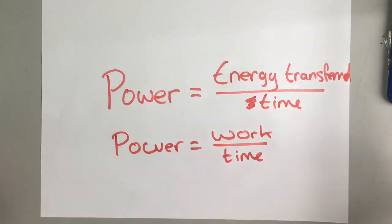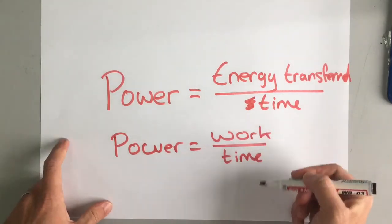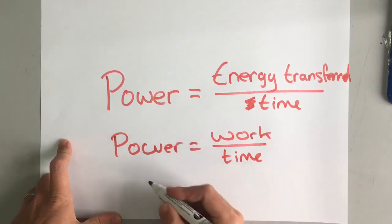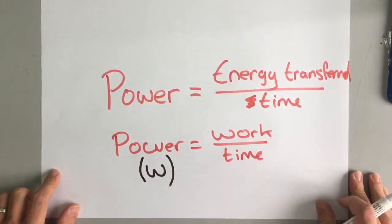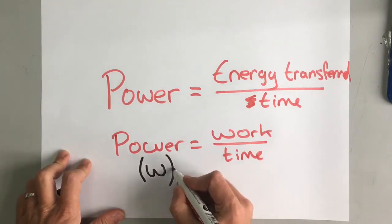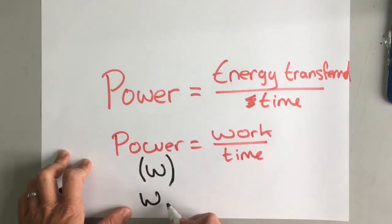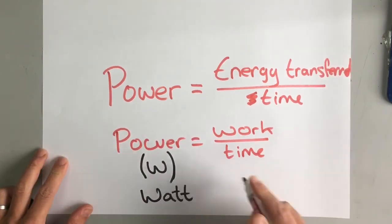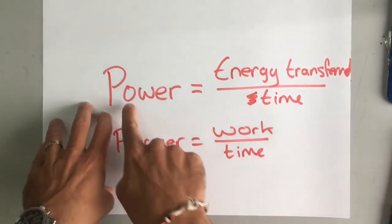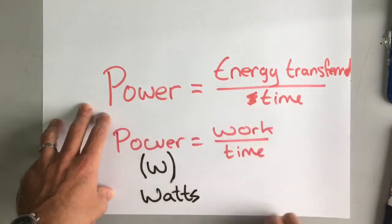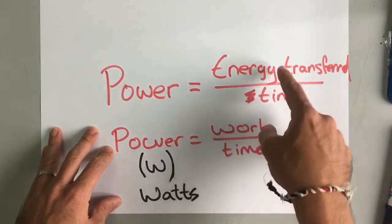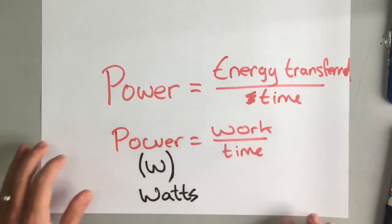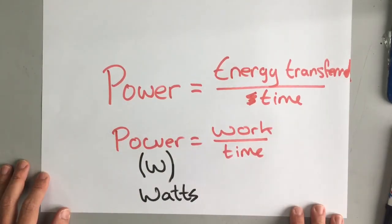Now power has its own special units. We could use joules per second, but actually we give joules per second an even better name after the person who invented it called Mr. Watt. So power is measured in watts. So power is energy transferred per unit of time or per second, or the same thing really. Power is work done over time.